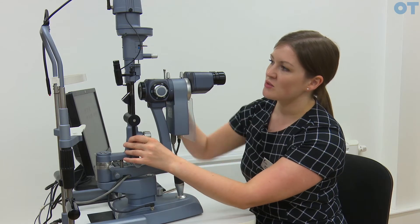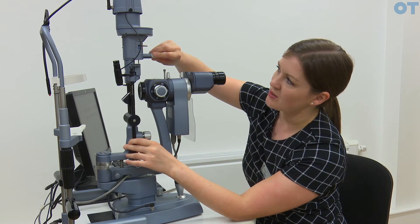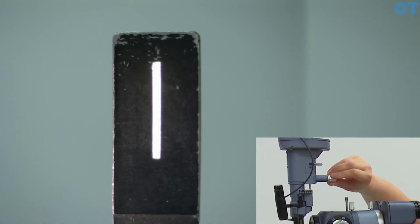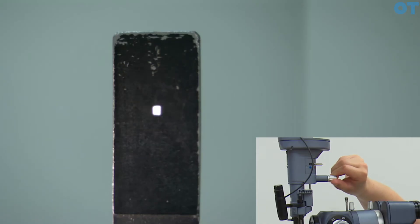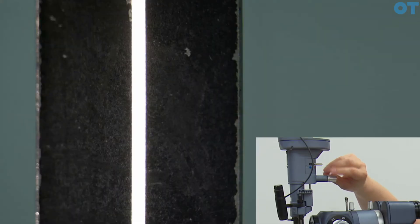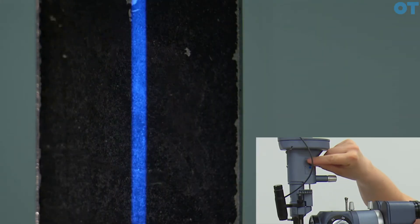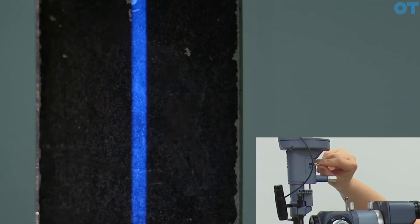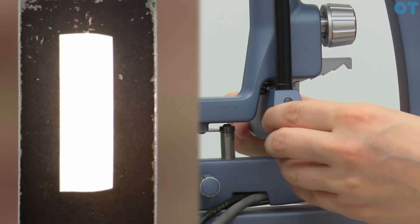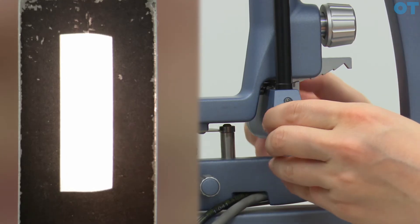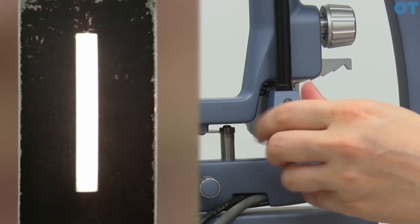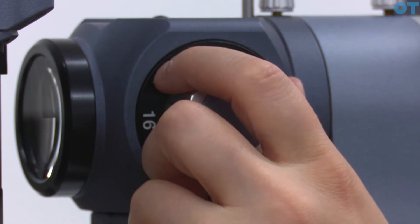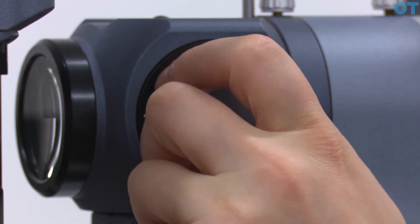With the Haag-Streit you have your illumination and your slit height at the top using this graticule here. We have filters which change the characteristics of the beam. We have our slit width here and magnification controls here.